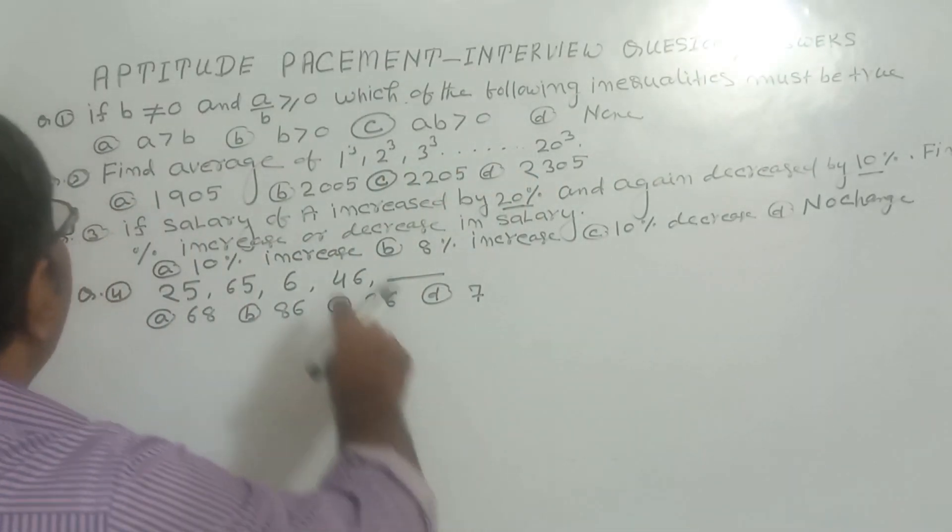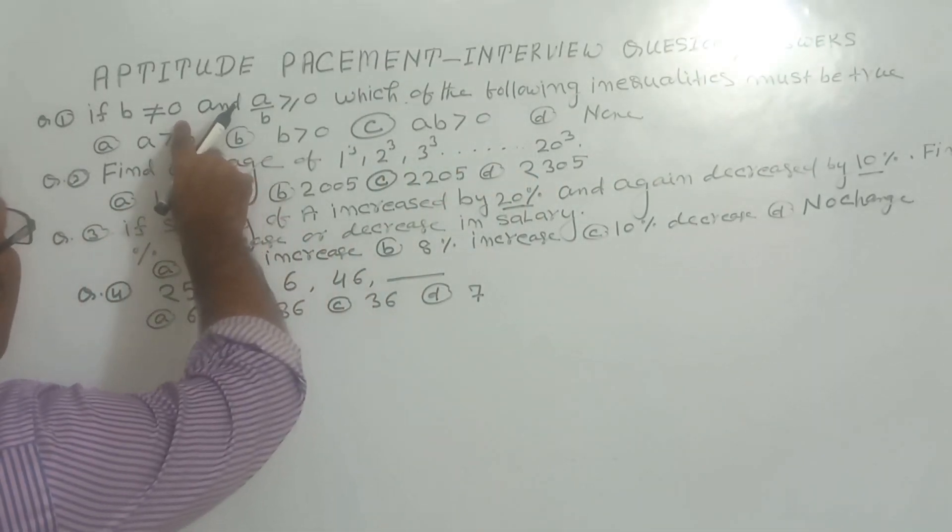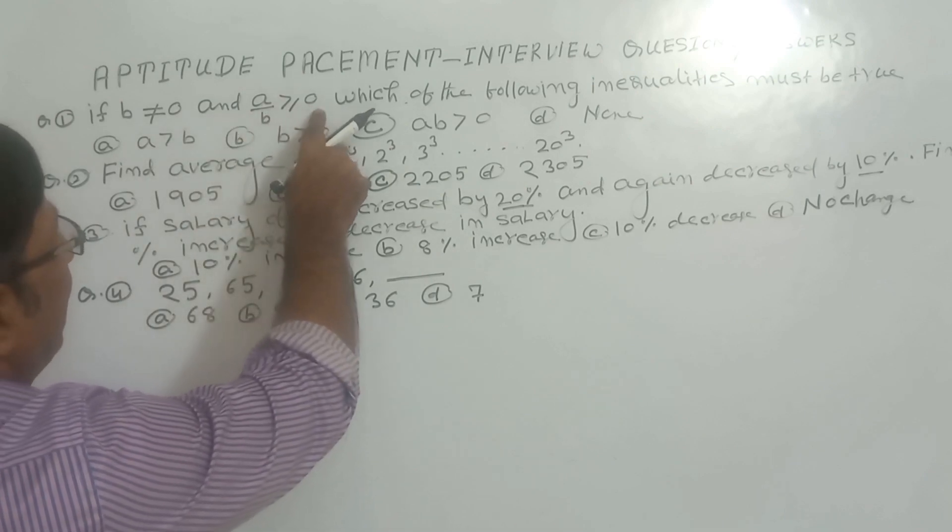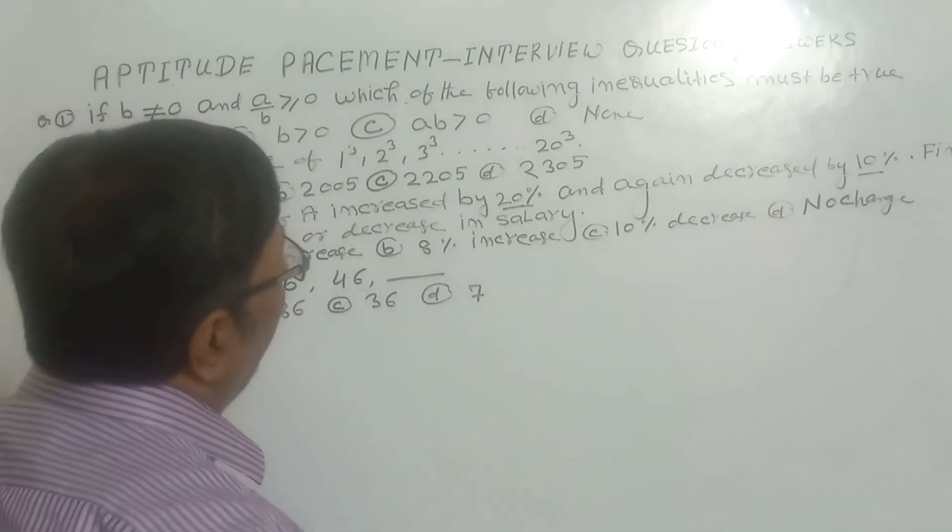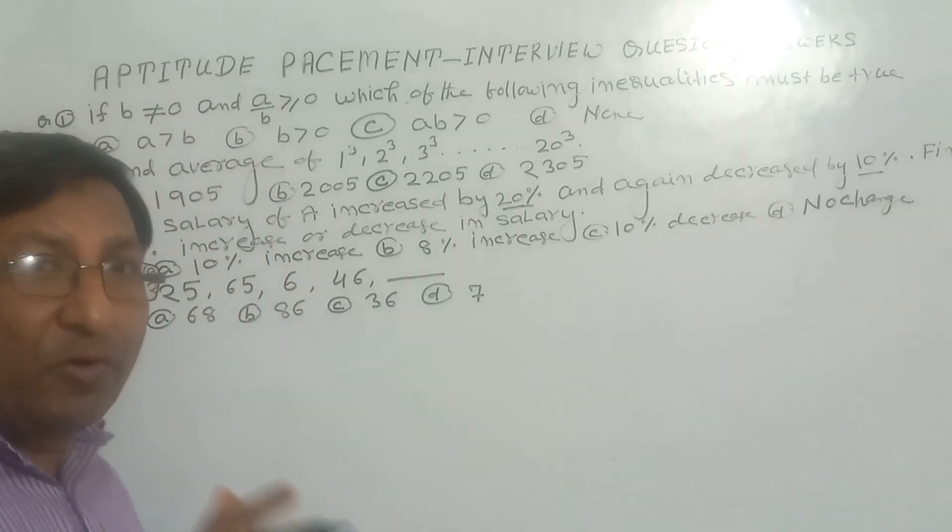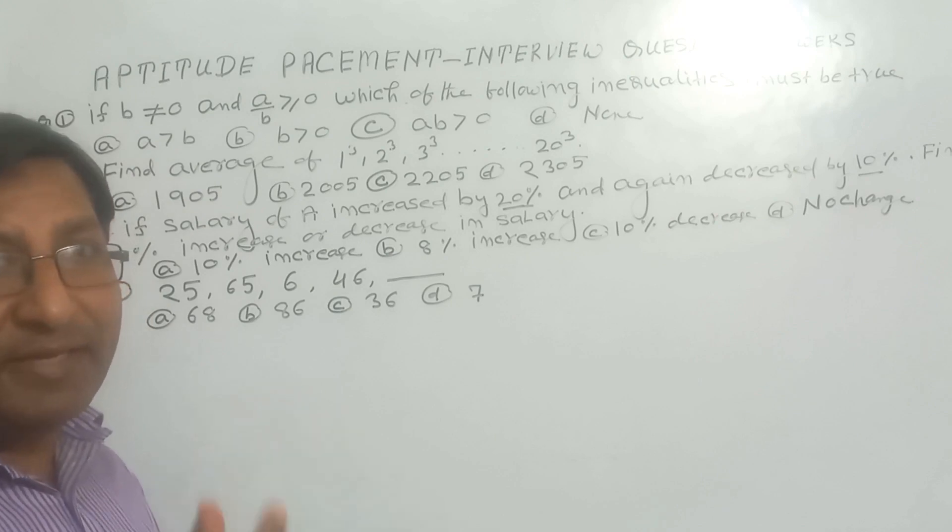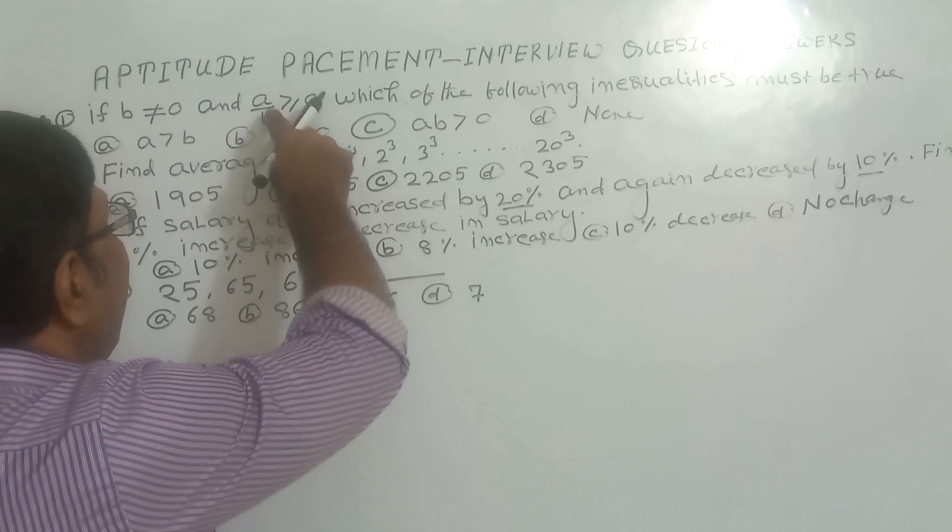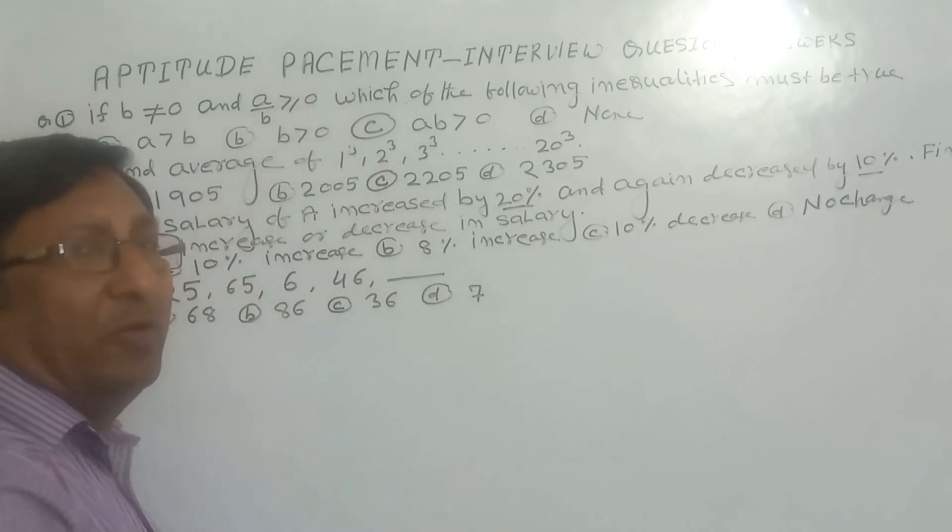So question is what: if B is not equal to 0 and A upon B is greater than 0, then which of the following inequalities must be true? That means B may be less than 0 or B may be greater than 0, and A upon B is greater than or equal to 0.